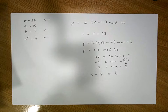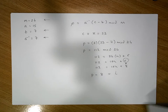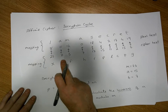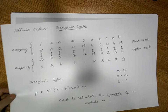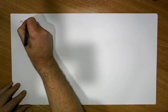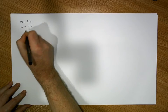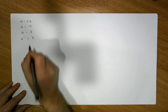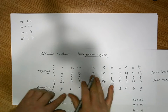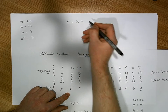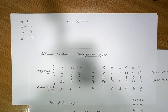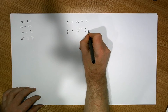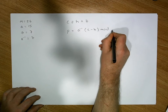Let's do another example with the next character, which is H, represented as 7. Keeping in mind that m is 26, a is 15, b is 7, and a inverse is equal to 7. When the ciphertext is H, which is equal to 7, the plaintext comes from the formula: p is equal to a inverse times the ciphertext minus b, modulo m.